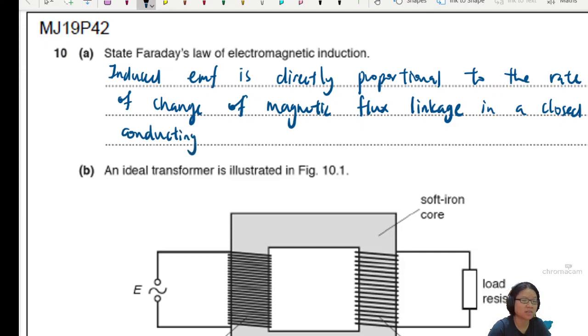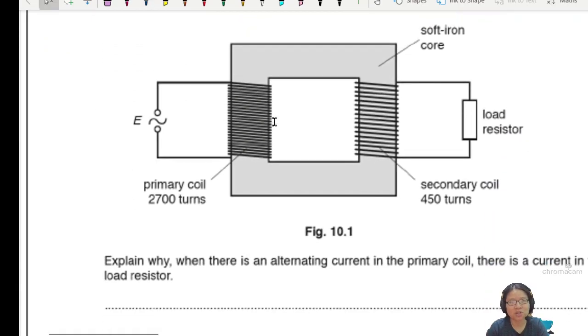Lost count the number of times Miss Ellie and I have written this. Magnetic flux linkage in a closed conducting loop. And I guess whenever we write this, the sentences are a bit different, but it doesn't matter. So we're done. One minute to write the definition.